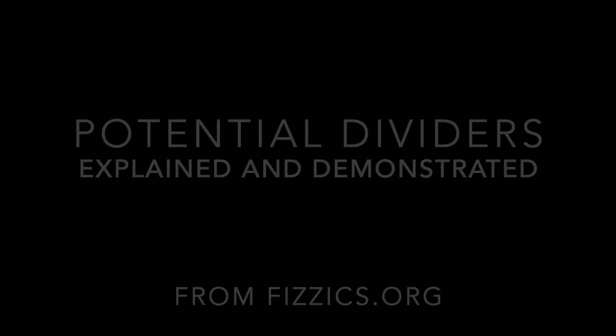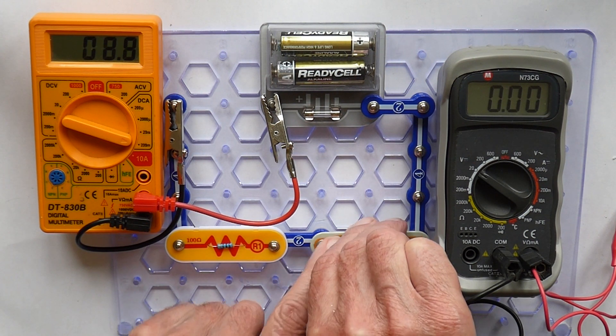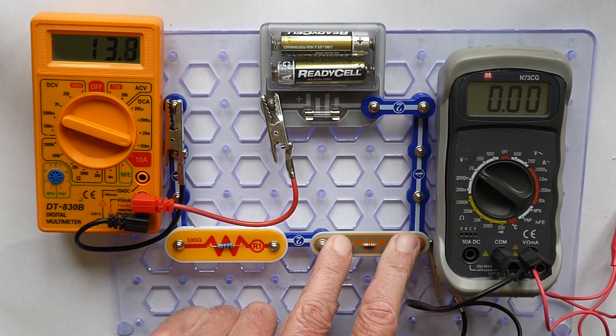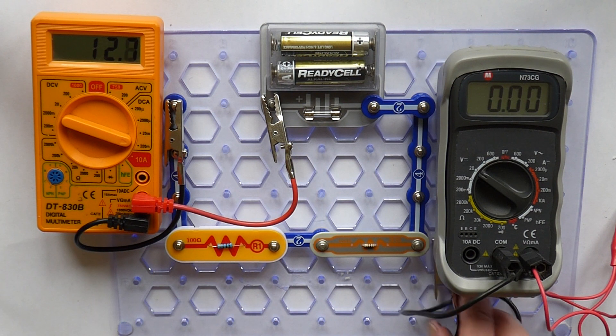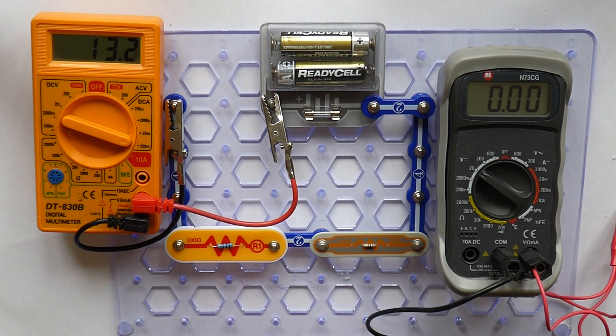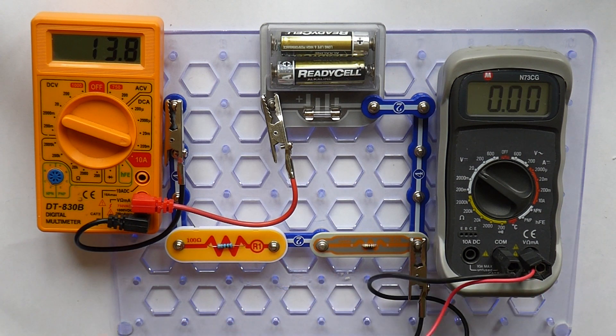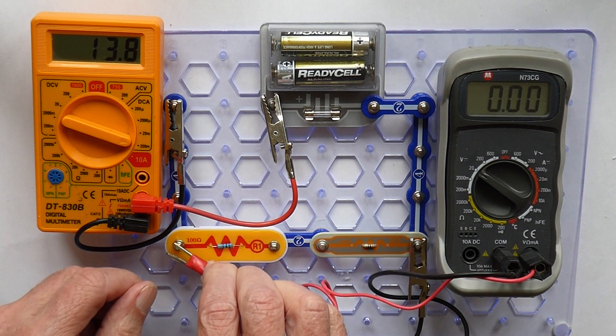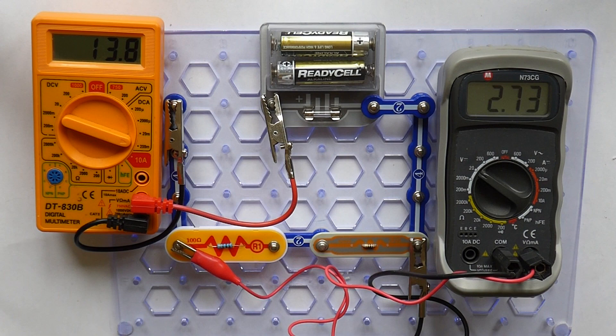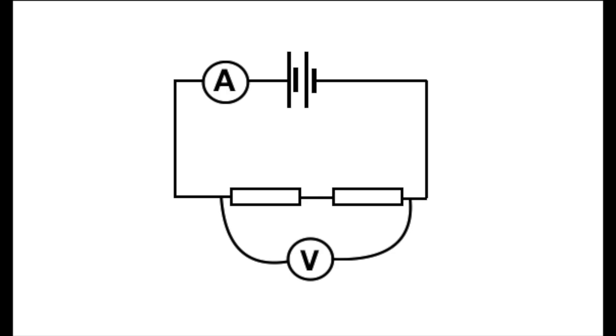A potential divider is a simple device in a circuit to produce a voltage which is lower than the supply voltage. This potential divider circuit has two resistors in series, they're both 100 ohms. Although they don't look the same, they are supposed to be exactly the same. So the circuit diagram looks like this.